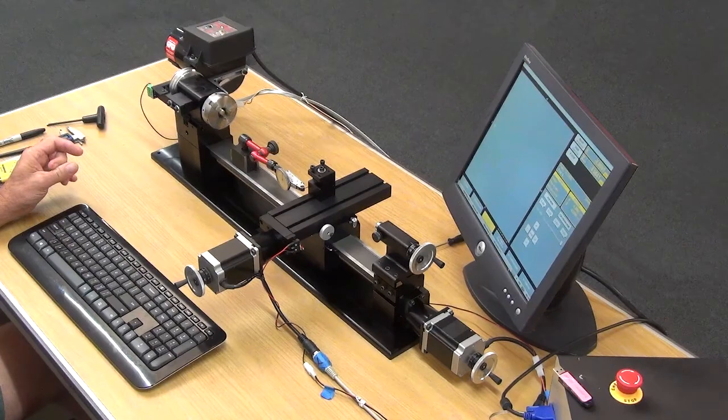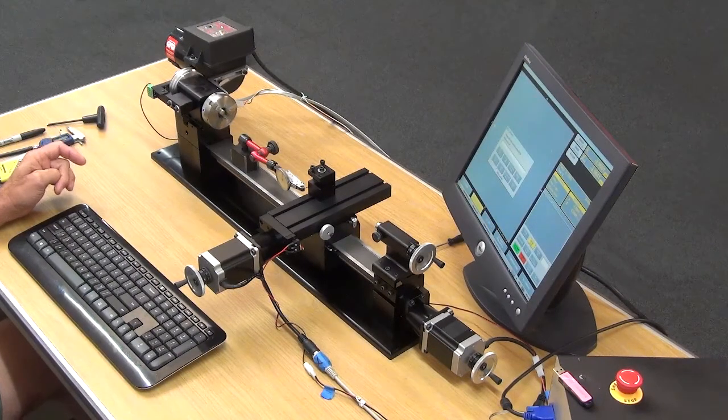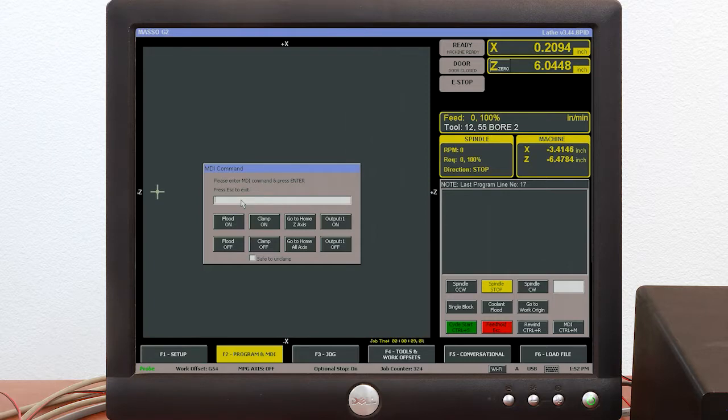Okay so what we're going to do is go to F2 program MDI for the MDI mode. Right now the Z axis is loaded in the Z minus direction. So I'm going to punch in G code to move four thousandths in the plus direction and we'll see how much the indicator moves.